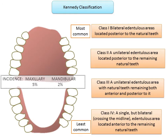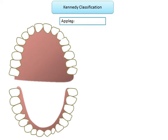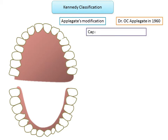Applegate's modification was proposed by Dr. O.C. Applegate in 1960. It represents the capability of the abutment teeth to be suitable enough for supporting the RPD. Based on the condition of the abutment, Applegate included two additional groups.